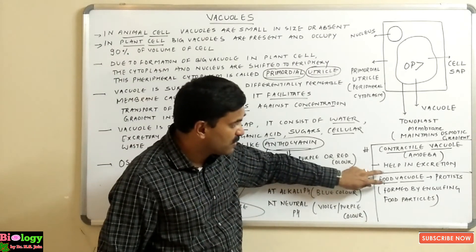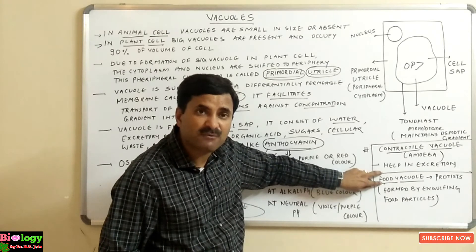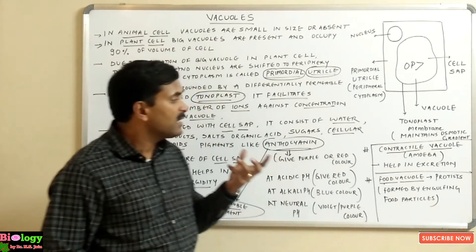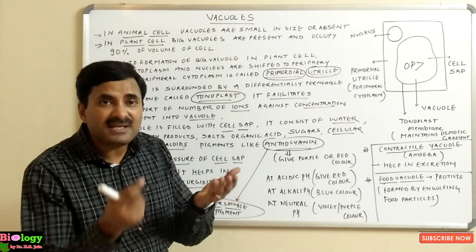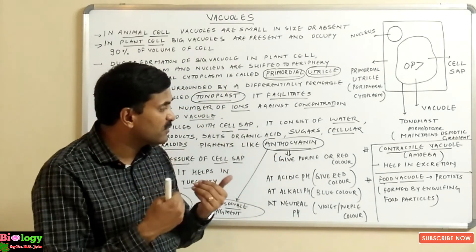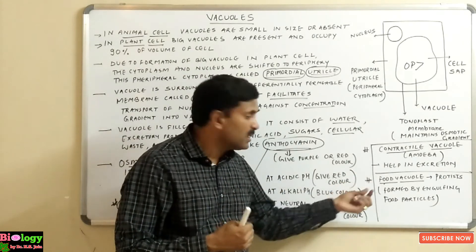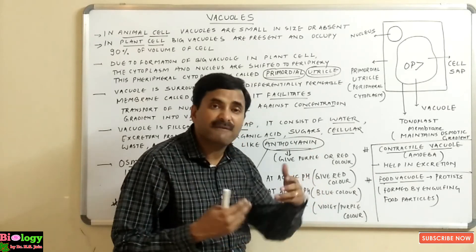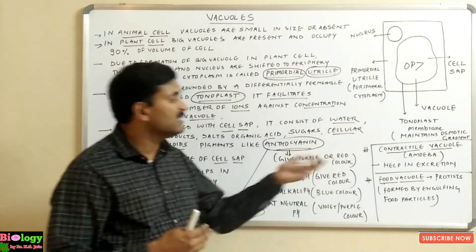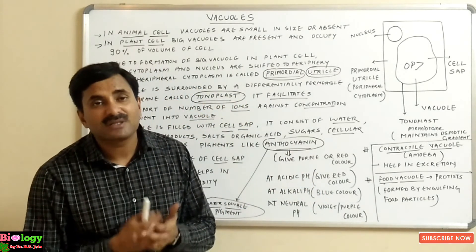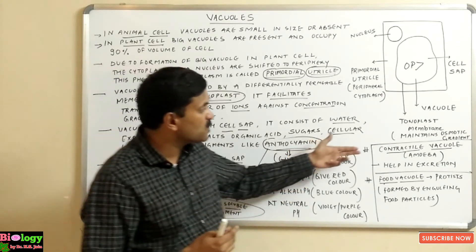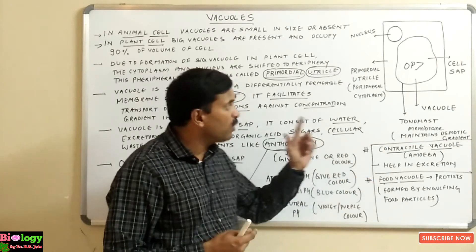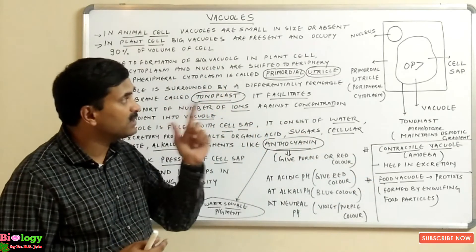The food vacuole is found in many protist organisms. As they engulf food particles, a vacuole is formed inside them because of the engulfing of the food, and this vacuole is called the food vacuole.